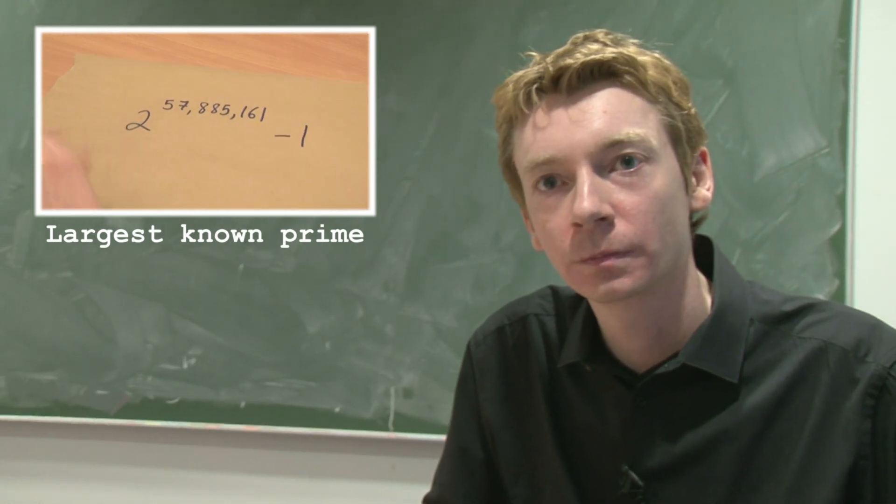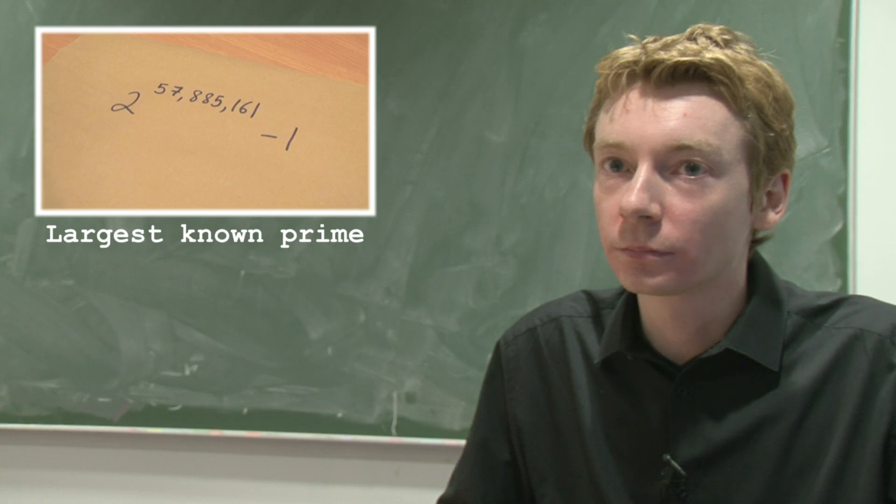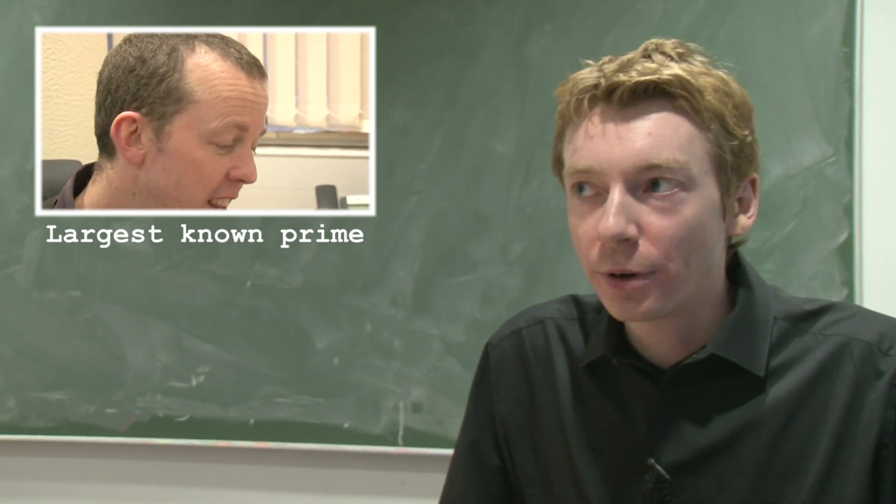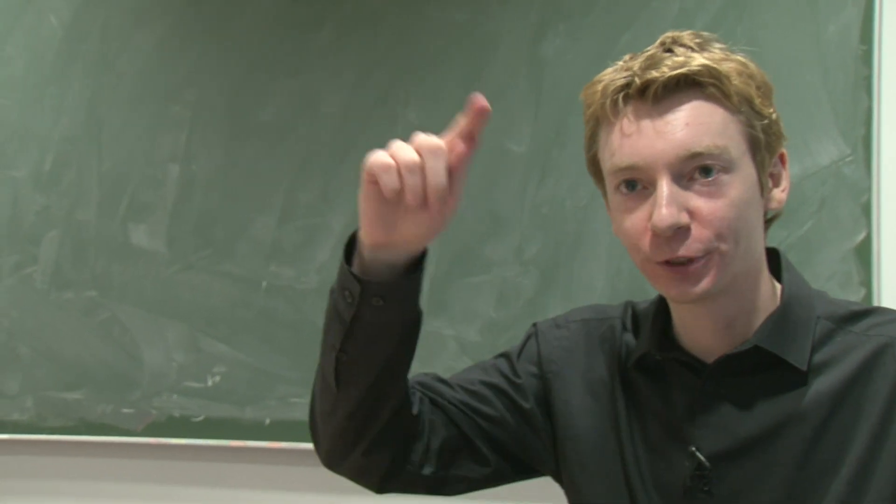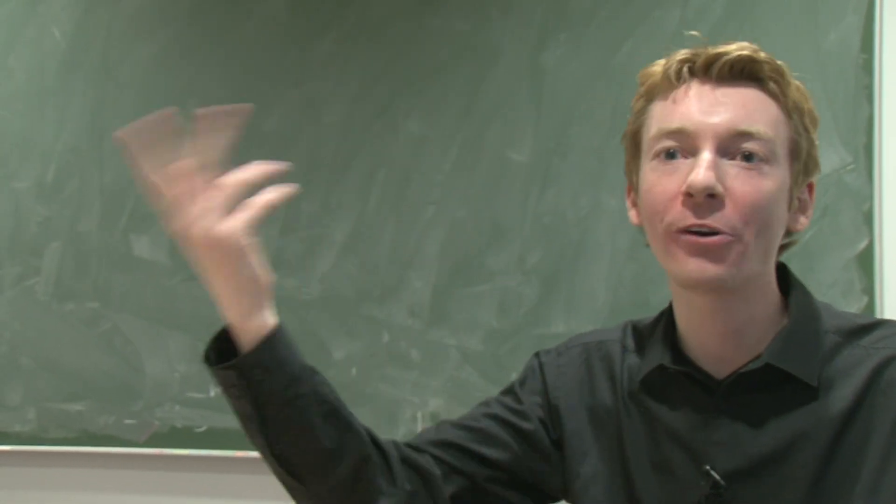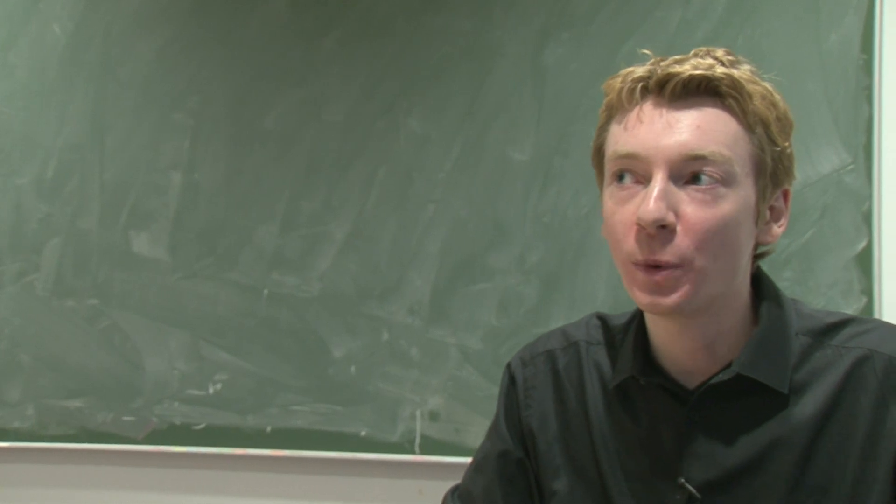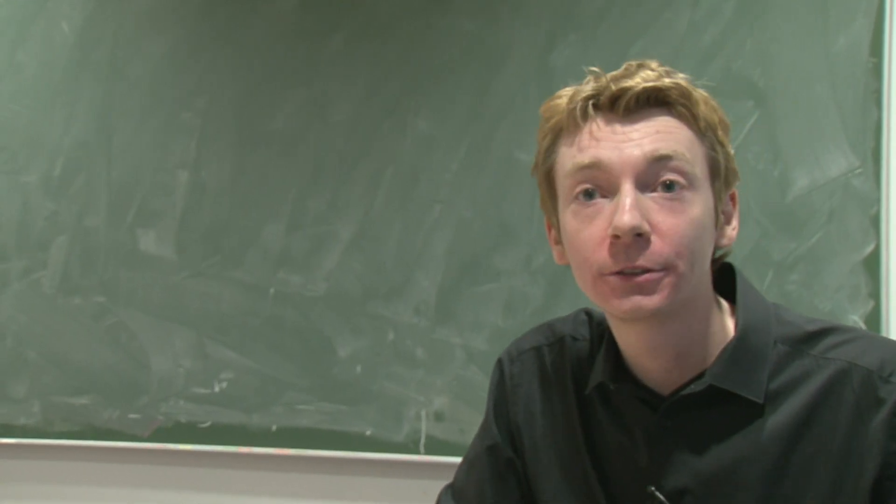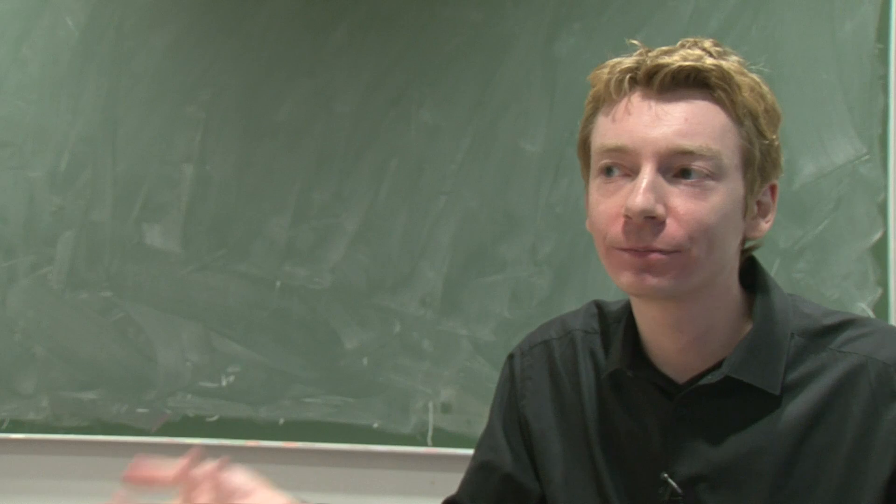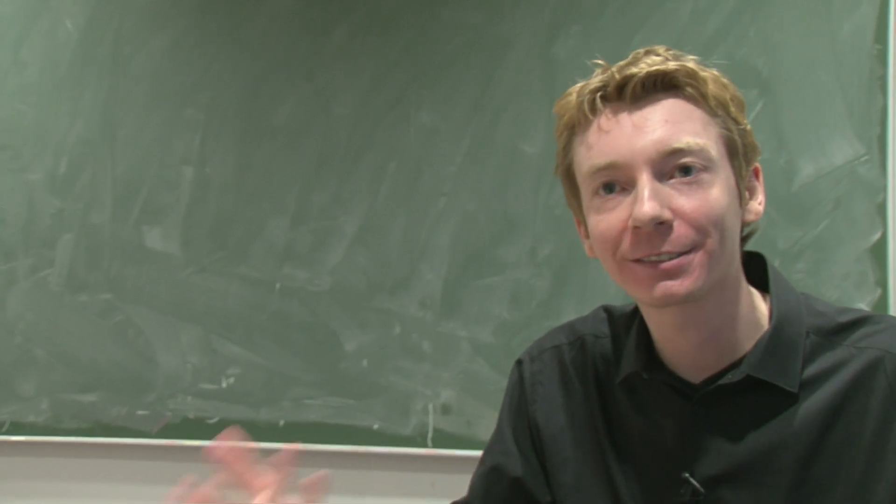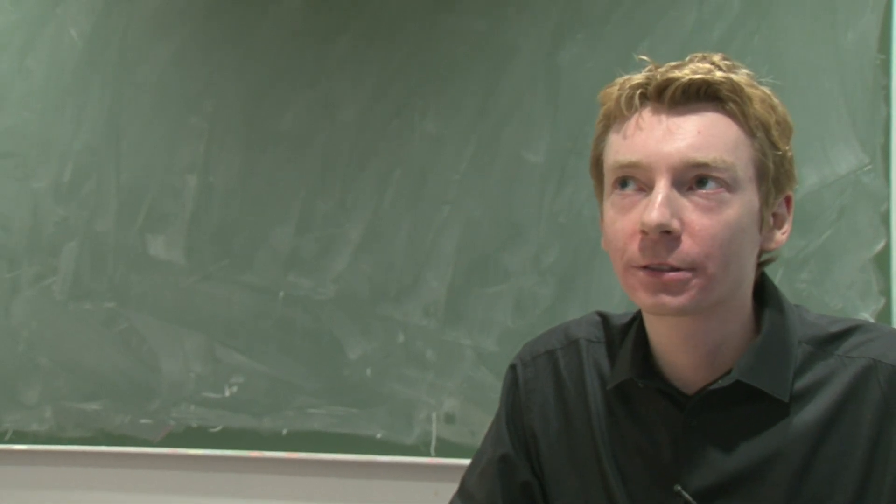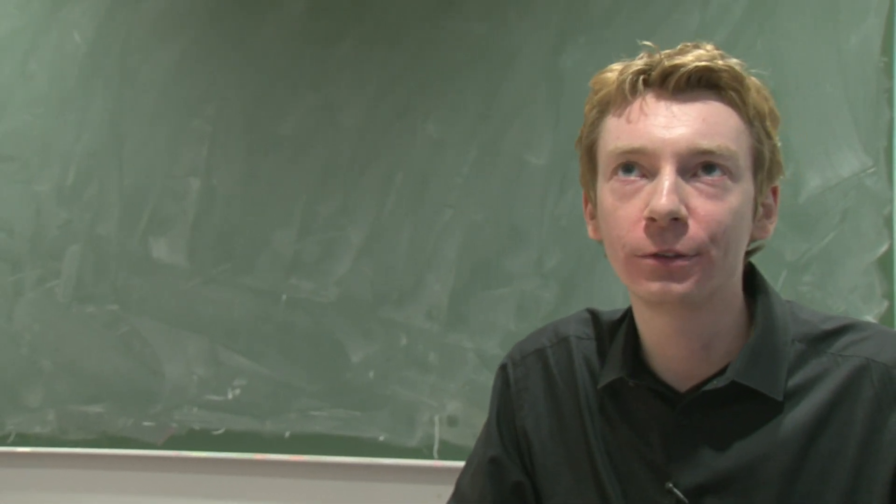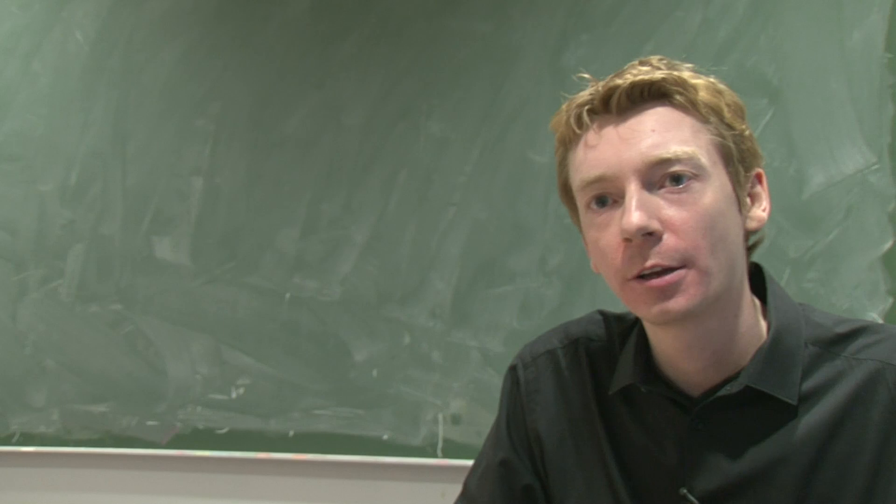These ginormous primes that get found, are they found on diagonals? Like this largest prime known, was that on a diagonal? The largest prime known was a Mersenne prime, which is of the type 2 to the power n minus 1. It's 1 less than the power 2, which is a way to look for large primes. It's computationally, it's kind of easier to do. It's not the most, perhaps it's not the most fruitful way, because they're quite rare Mersenne primes.